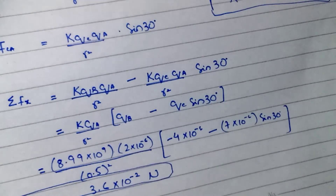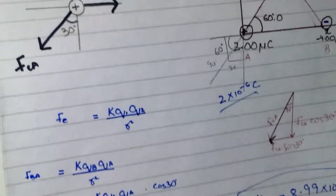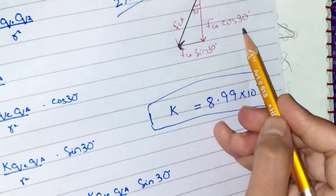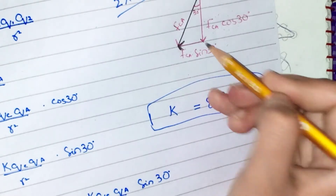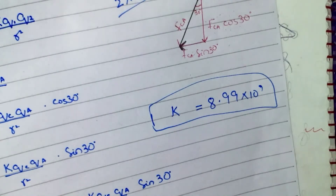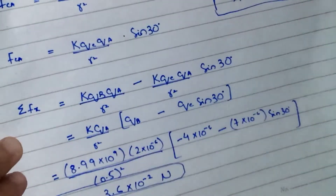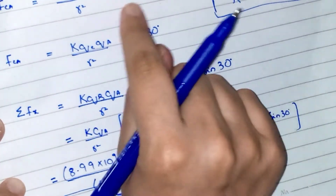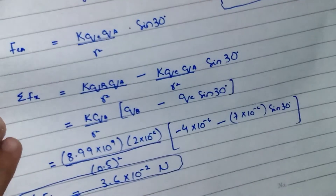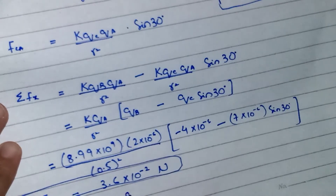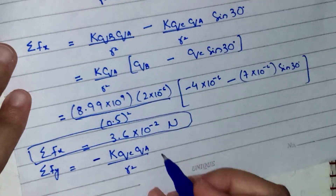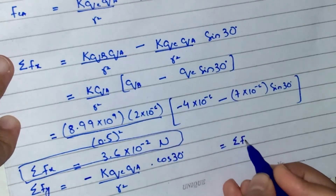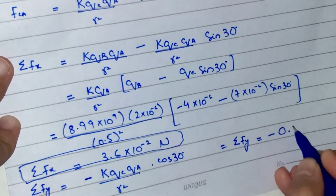Next, we sum all forces on the y-axis. There is only one force on the y-axis: the y-component of Fca, which is Fca·cos30°. Since its direction is downward (negative y-axis), ΣFy = −k·qC·qA / r²·cos30°. Substituting gives ΣFy = −0.436 N.